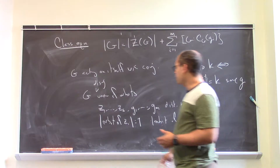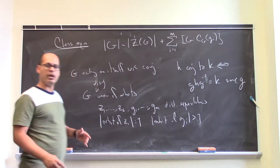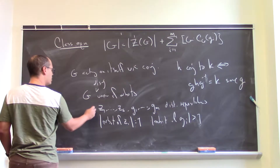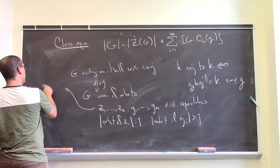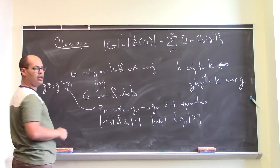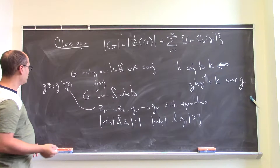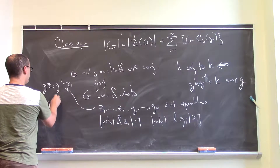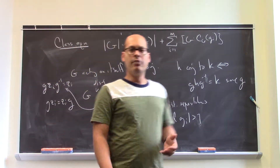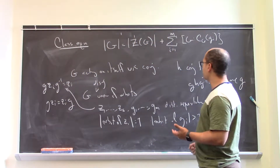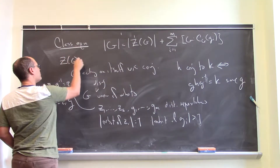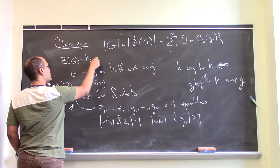Now, if the orbit of something has size one, that means that whenever you conjugate, you do nothing. In other words, for the Zs, gZᵢg⁻¹ = Zᵢ for all g, which is to say that Zᵢ commutes with everything in the group. So this description tells us that Z(G), the center, is exactly {Z₁, …, Zₛ}.